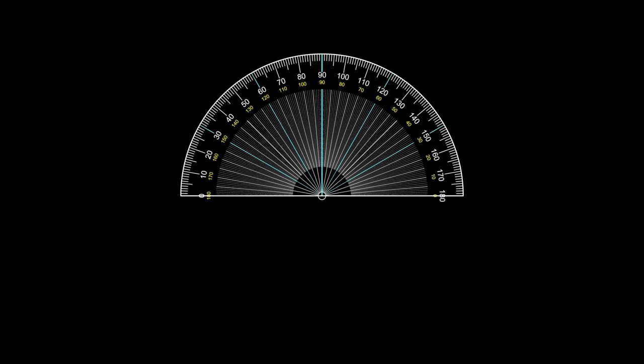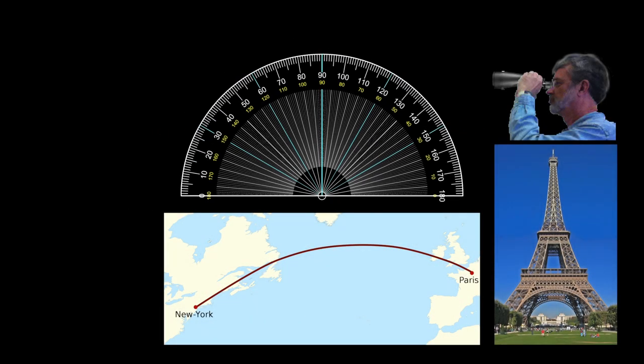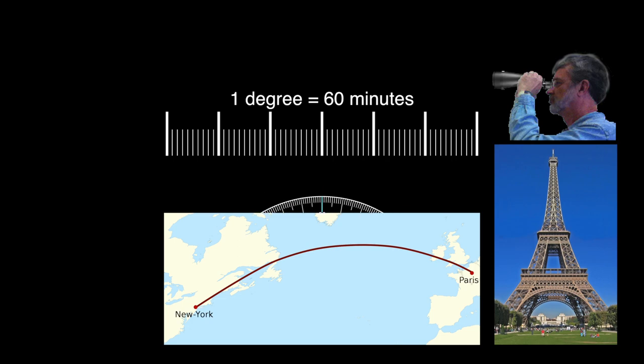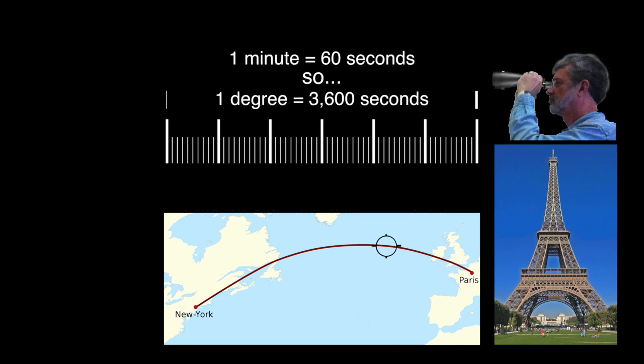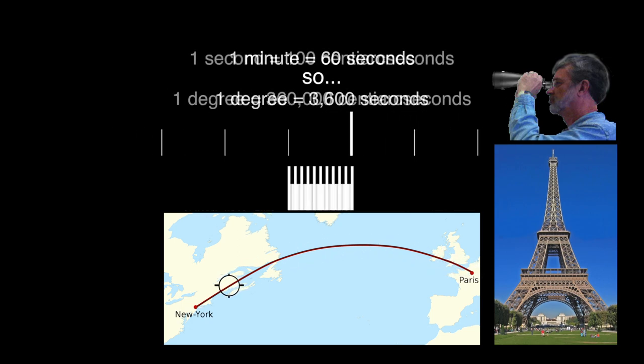Boffin explained that his team had been able to measure the positions of these two objects with a precision of a few milliarcseconds. This is like a person in Paris being able to measure the position of someone in New York with a precision of 10 centimeters.